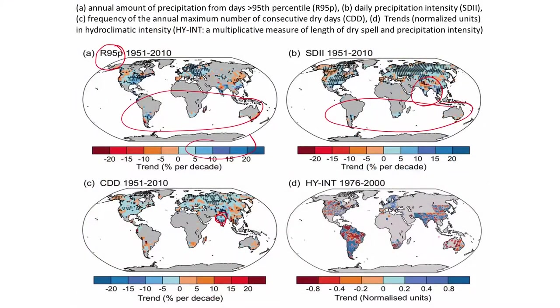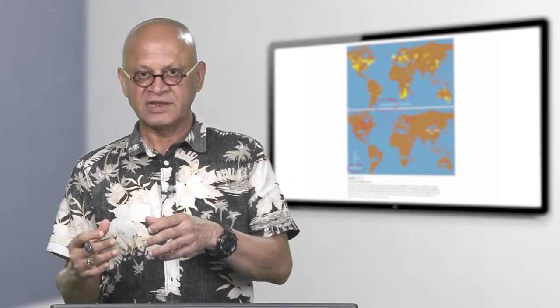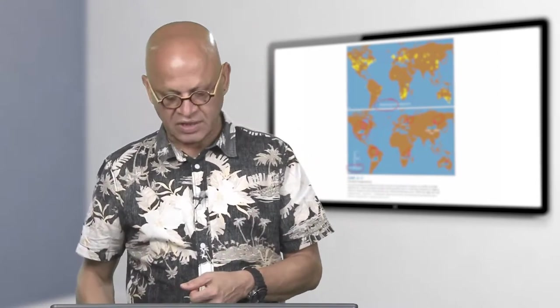All that rainfall results in what are called hydroclimatic or intensity. They are like floods and droughts. That is like a multiplicative measure of the length of dry spell and precipitation intensity. You can see that there are changes, this is normalized we would not go into the detail. But just remember that the rainfall intensity changes, distribution changes are going to appear as hydroclimatic intensity changes. We will see more details on how floods over India are changing for example, when we do the monsoon lecture.